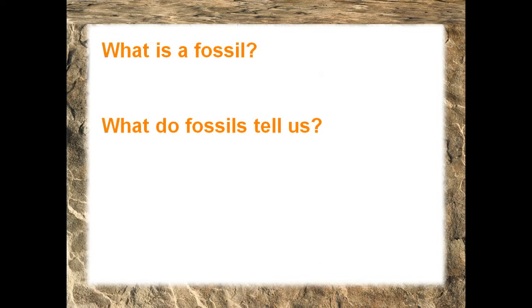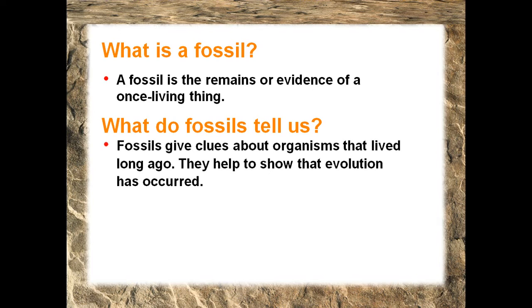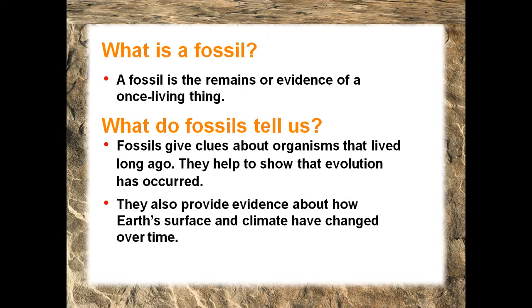So before we get started, let's go ahead and discuss what is a fossil, and after that let's talk about what fossils actually tell us. A fossil is described as the remains or evidence of a once living thing. Fossils give us clues about organisms that lived long ago. They help to show that evolution has occurred. They also provide evidence about how earth's surface and climate have changed over time.